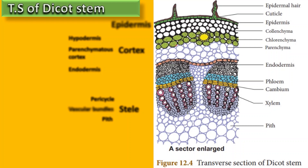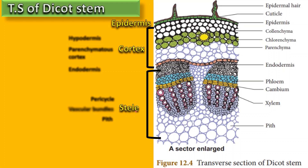This section mainly consists of epidermis, cortex, and stele. Epidermis is the outermost layer. Cortex is made up of hypodermis, parenchymatous cortex, and endodermis. The stele consists of pith, vascular bundles, and pericycle.